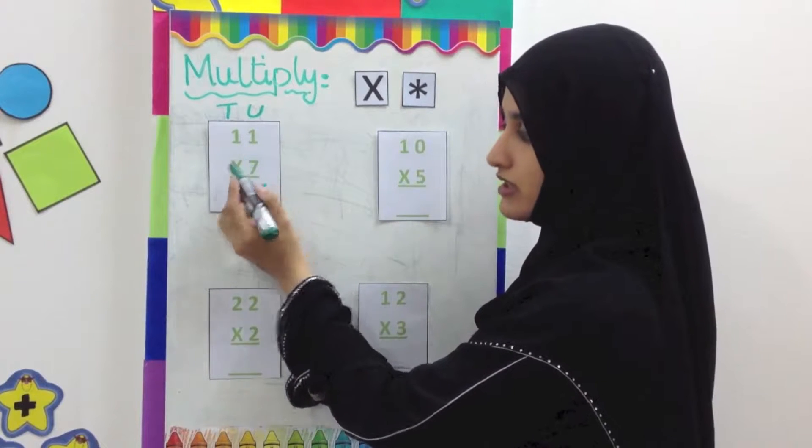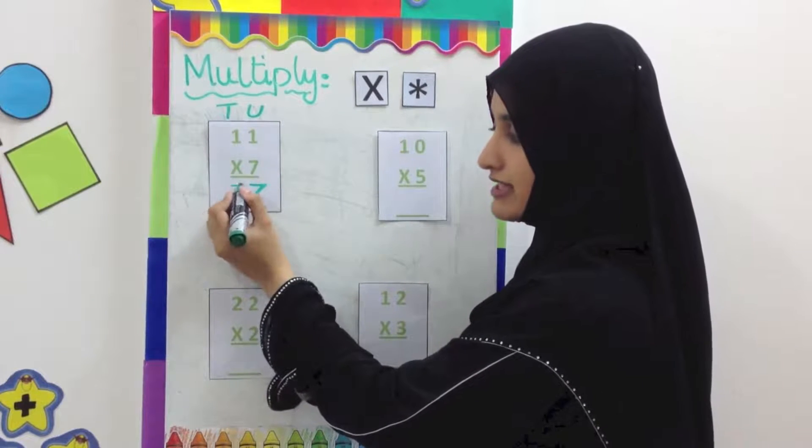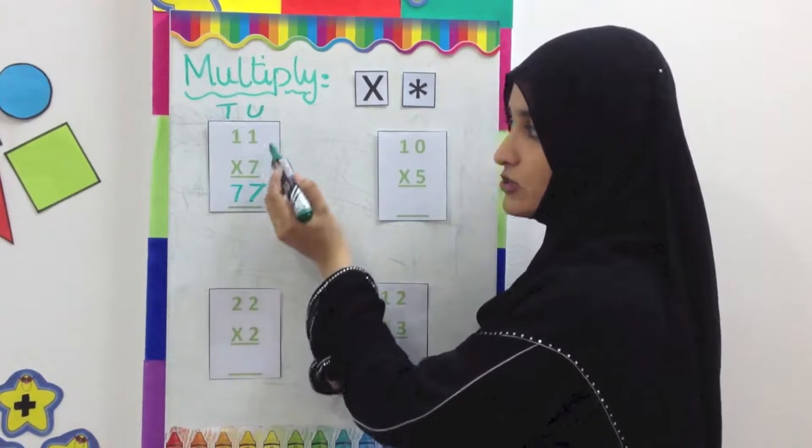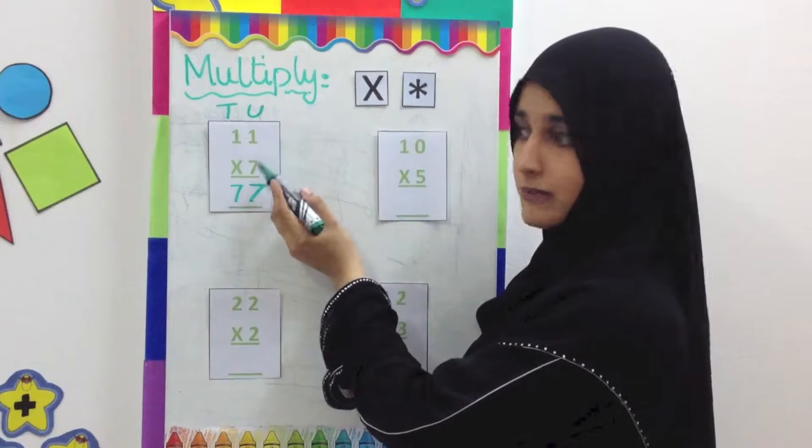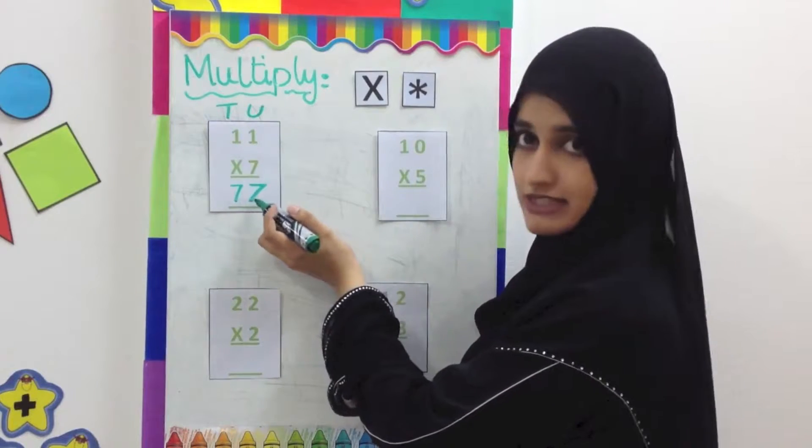So 7 ones are 7 again. So 11 multiplied by 7 makes 77.